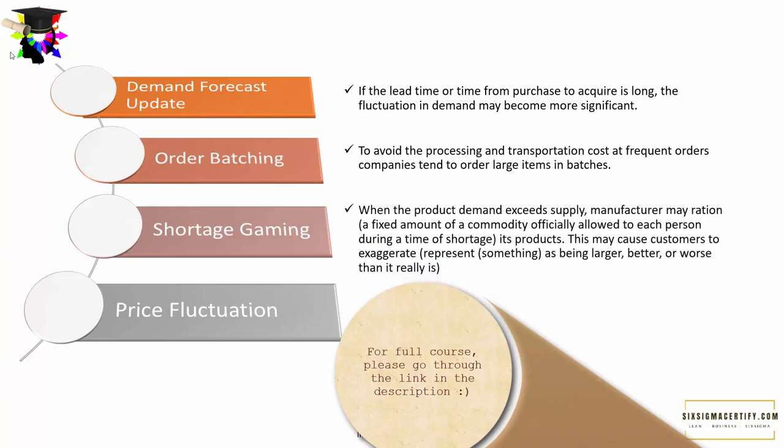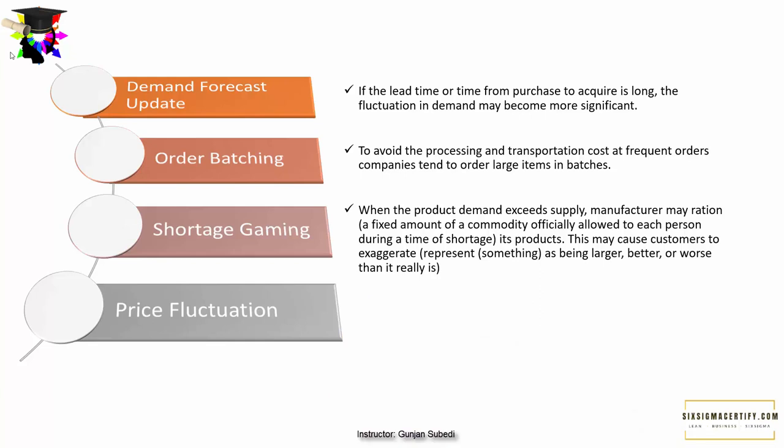The third cause is shortage gaming. When product demand exceeds supply, manufacturers may ration — that is, allow a fixed amount of a commodity to each person or company during a shortage. When the manufacturer rations its product, customers may exaggerate their orders to counter the rationing. This can cause order cancellations, making it very difficult for the manufacturer to determine the real demand in the market.